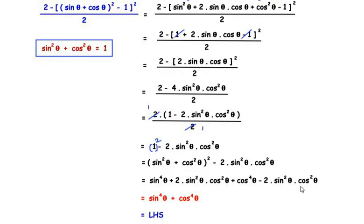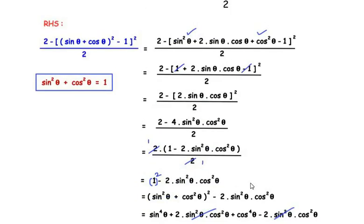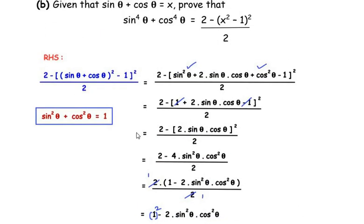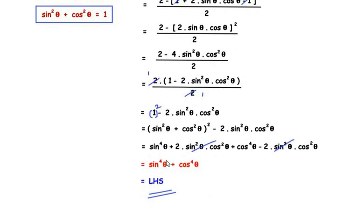The +2 sin²θ cos²θ and −2 sin²θ cos²θ cancel each other, leaving sin⁴θ + cos⁴θ, which equals the left hand side. So we have proved that the right hand side equals the left hand side. I hope you understood all the steps. If you found this video useful, check out the playlist for more examples, and like, share, and subscribe to my channel. Thank you for watching.